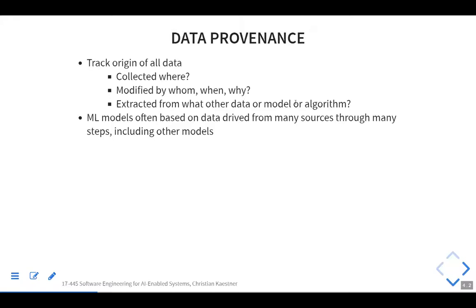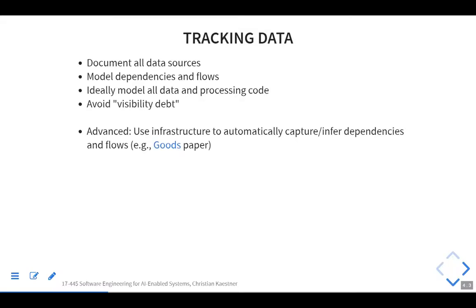This is non-trivial. You want to track how data flows through the system. Model dependencies and flows are sometimes called 'visibility depth' in the paper you read at the very beginning of the semester. In the reading, you looked at one specific approach that Google did to track provenance of their data.